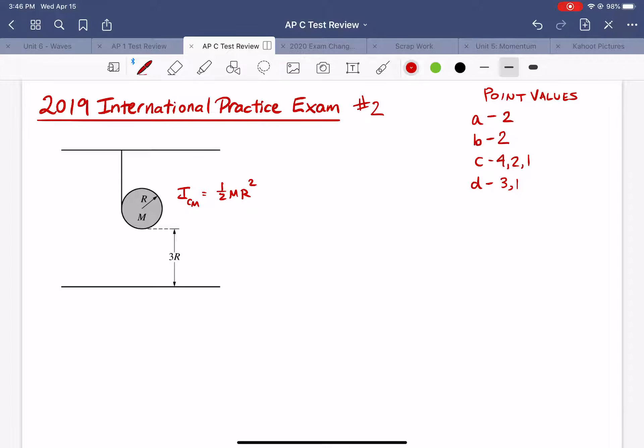All right, welcome back. Here's problem two. In this one we have a cylindrical object that's being suspended from a ceiling by a string that's wrapped around it. So this object has a moment of inertia of 1/2 MR² and it's suspended up by a height of 3R above the floor.